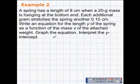To approach this problem, we really need to understand the meaning of this right here. The first sentence, a spring has a length of eight centimeters when a 20 gram mass is hanging at the bottom end, will give us an ordered pair. We're going to determine our ordered pair by which variable will be the independent and which variable is going to be the dependent variable.